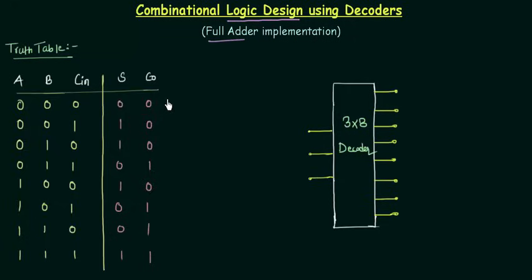Let's write down the min terms. This is your M0, M1, M2, M3, M4, M5, M6, M7. So we are having from M0 to M7 min terms for sum and our carry output.